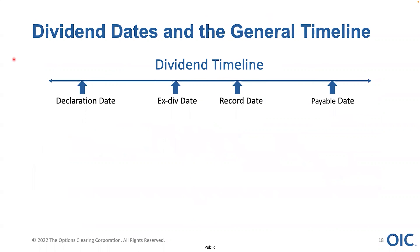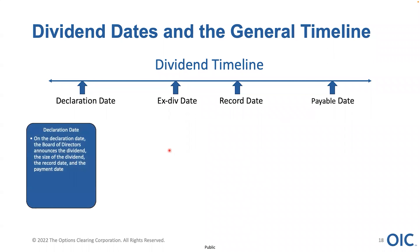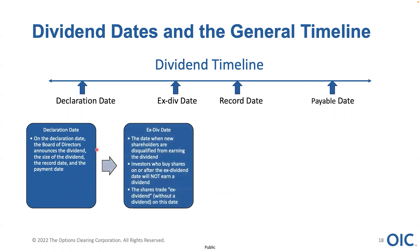There are four important dates in the dividend timeline: the declaration date, the ex-dividend date, the record date, and the payable date. The declaration date is simply the date that the board of directors announced the dividend — they will tell you the size of the dividend, the record date, and the payment date. Probably the most important of all these dates is the ex-dividend date. This is the date when new shareholders are disqualified from earning the dividend. If you buy a stock on the ex-dividend date, you won't receive the dividend for that quarter — you have to buy it before the ex-dividend date.